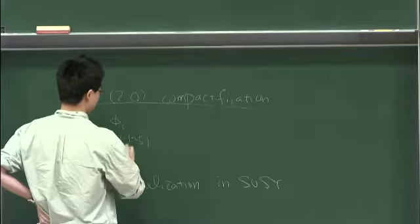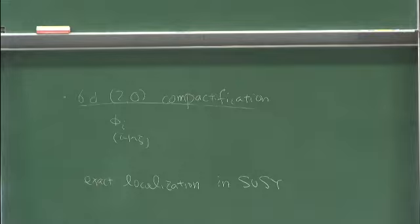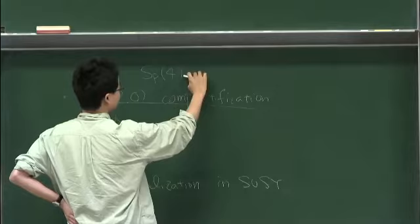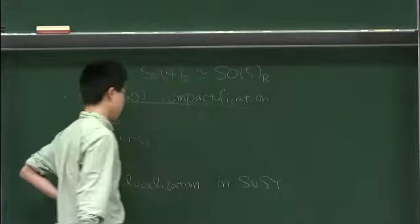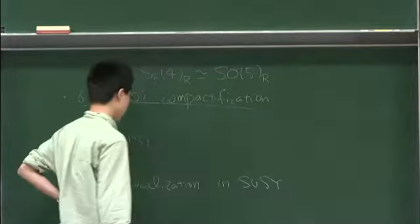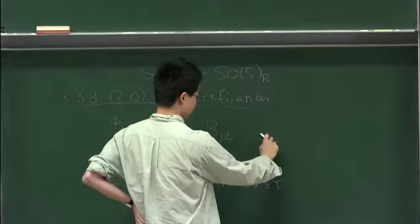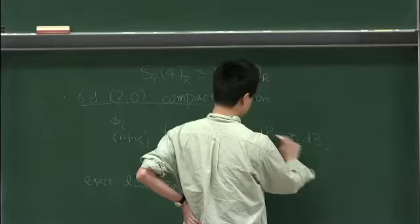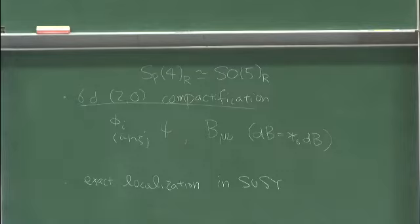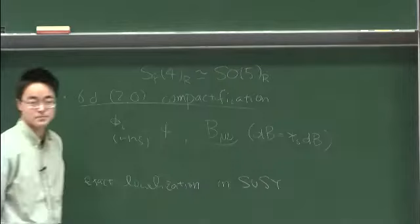If you have the (2,0) theory, there is Sp(2) — Sp(4) depending on preference — which is locally the same as SO(5) R-symmetry. It has five-dimensional R-symmetry, and there are these five scalars transforming under SO(5) rotation symmetry. There are some fermions satisfying self-symplectic-type conditions. And it has a curious field V_{mu nu}, the two-form satisfying the self-duality constraint in six dimensions.